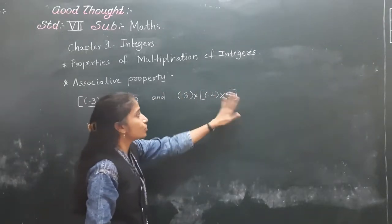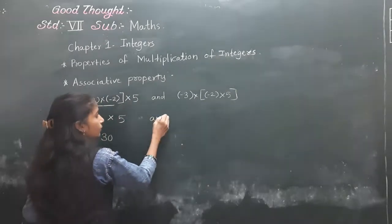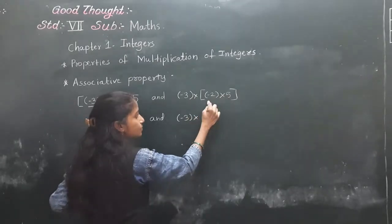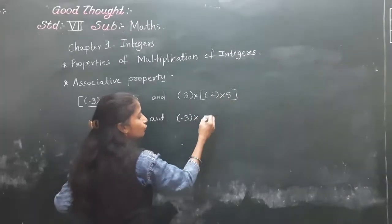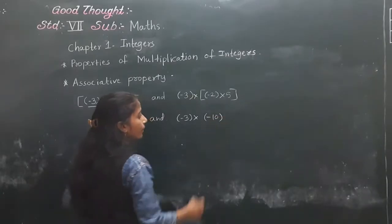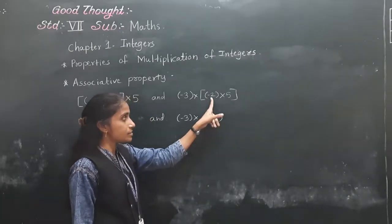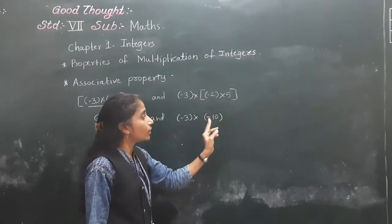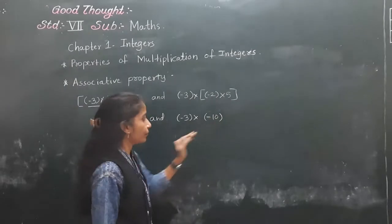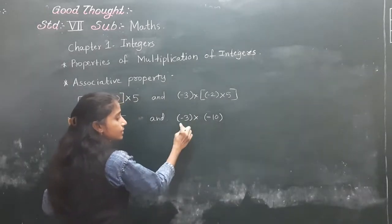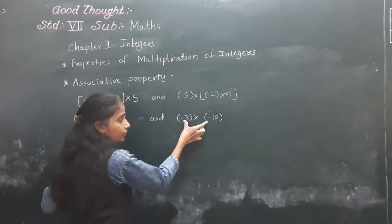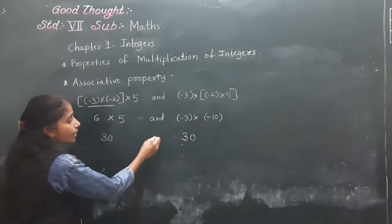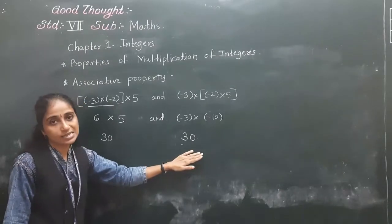In the second grouping, we put the last two numbers in the bracket: minus 3 into bracket minus 2 into 5. First solve minus 2 into 5 equals minus 10, then minus 3 into minus 10 — both are negative integers, so product is positive: 30. The answer does not change — it remains same.